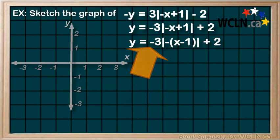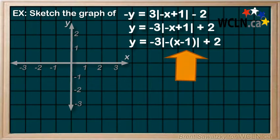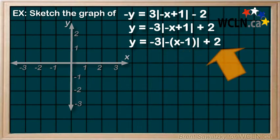A vertical reflection here, a horizontal reflection here, a vertical expansion by 3 here, a horizontal translation right by 1 here, and a vertical translation up by 2 here.